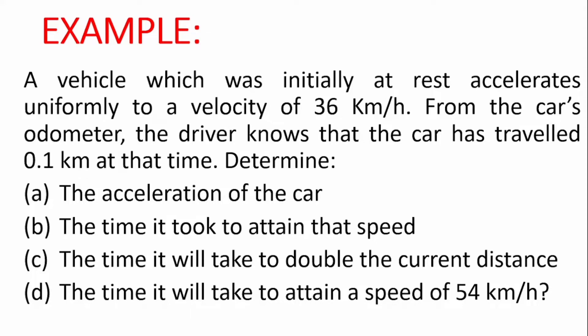For this problem, we are told that a vehicle was initially at rest and it accelerates uniformly to a velocity of 36 km per hour. From the car's odometer, the driver knows that the vehicle has traveled 0.1 km at that time. We are told to determine the acceleration of the car, the time it took to attain that speed, the time it will take to double the current distance, and the time it will take to attain a speed of 54 km per hour.